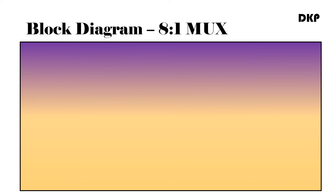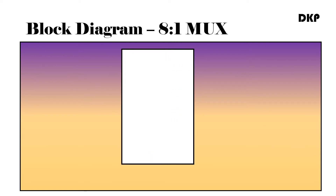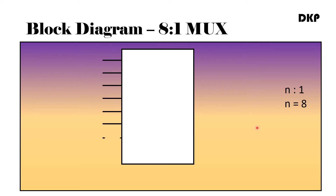In this video, we are going to learn more about 8-to-1 MUX. Let us see the block diagram of 8-to-1 MUX. In general, a multiplexer can be represented as n-to-1, where n is the number of inputs. In 8-to-1 MUX, there are 8 inputs — I0, I1, I2, I3, up to I7.